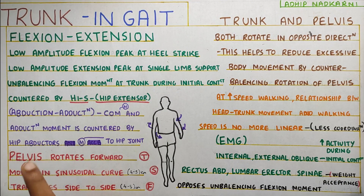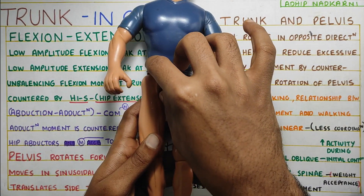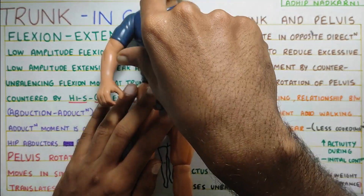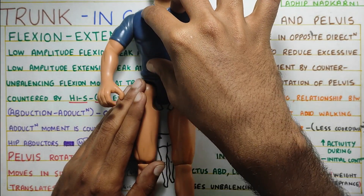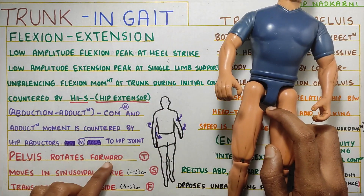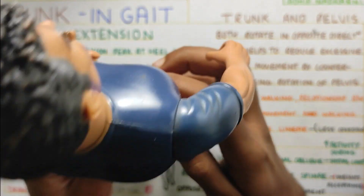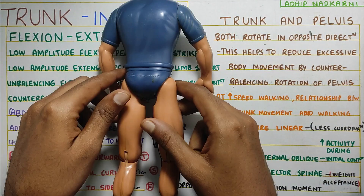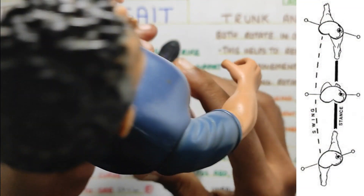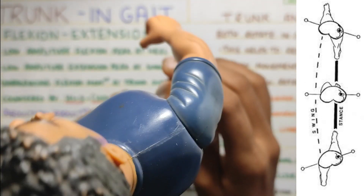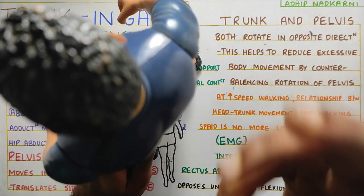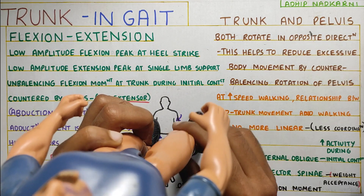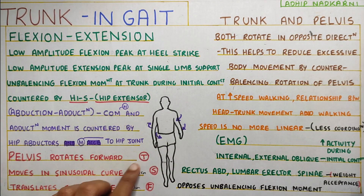Next we move on to the pelvis. Pelvis and trunk are not the same thing — they are separate entities with different movements in gait. Before talking about trunk rotation, we need to know what happens at the pelvis so we can compare the two. First, the pelvis rotates forward and backward in the transverse plane. As you take one step ahead, the pelvis rotates forward; as you take the other step, it rotates forward again. Pelvis movement is always in sync with the movement of your legs.